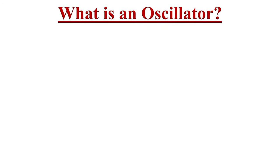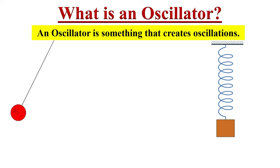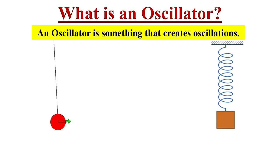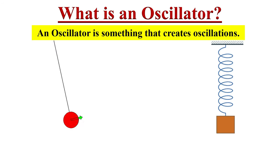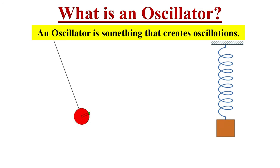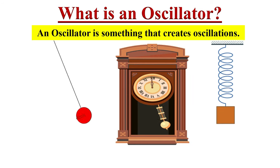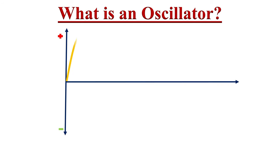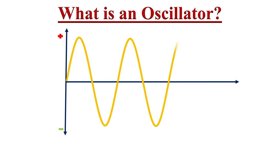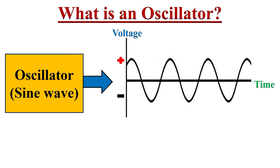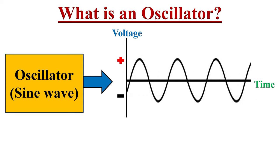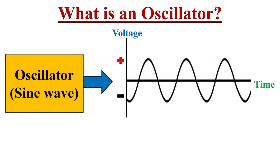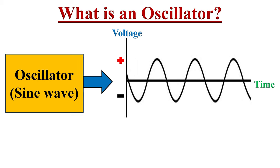What is an oscillator? An oscillator is something that creates oscillations, which involves periodic fluctuations between two states or values. A clock pendulum is a simple type of mechanical oscillator. In electronic engineering, we discuss oscillations in voltages that are fluctuating between two values. An oscillator is a circuit that generates a continuous repetitive waveform without any external input.